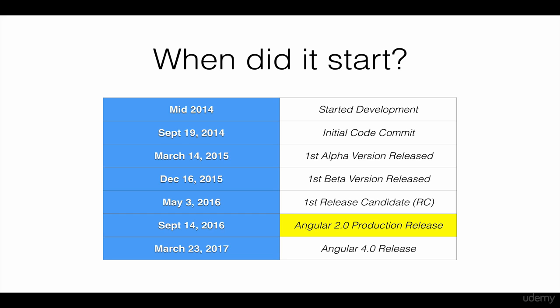The next and upcoming release versions have a higher version number only due to the new semantic versioning. Don't worry — Angular 4 and the upcoming Angular 5, 6, 7, and so forth are not another rewrite of the initial Angular 2 version released in 2016. So to simplify, we can just call Angular 2 simply as Angular. We will use the terms Angular 2 and Angular framework interchangeably throughout this course.